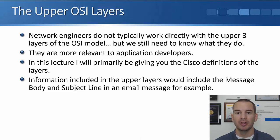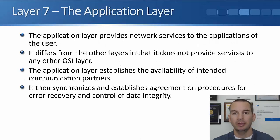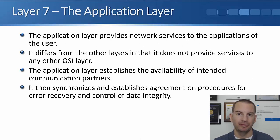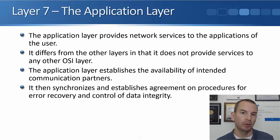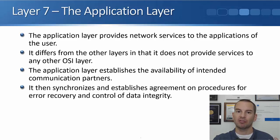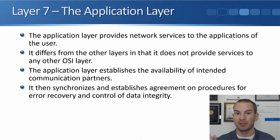Information included in the upper layers would include the message body and the subject line in an email message, for example. Let's look at the three top layers starting with layer seven, the application layer. This provides network services to the applications of the end user. It differs from the other layers in that it does not provide services to any other OSI layer. The application layer establishes the availability of intended communication partners — the host that this host is communicating with. You'll recall the straight line between two hosts at the same layer of the OSI stack.